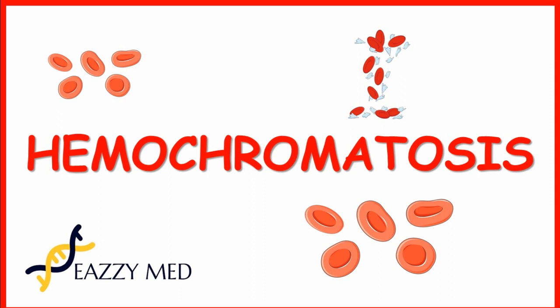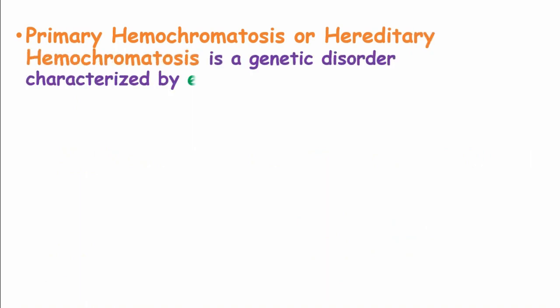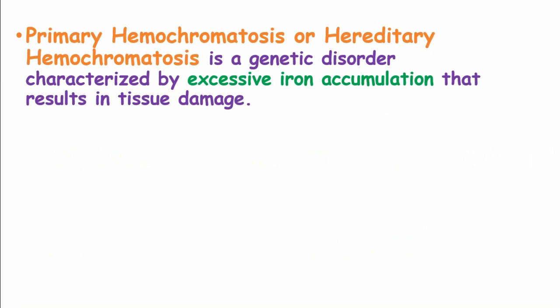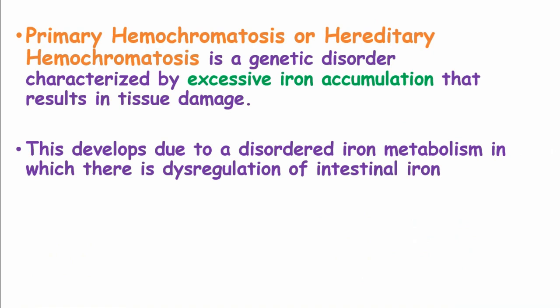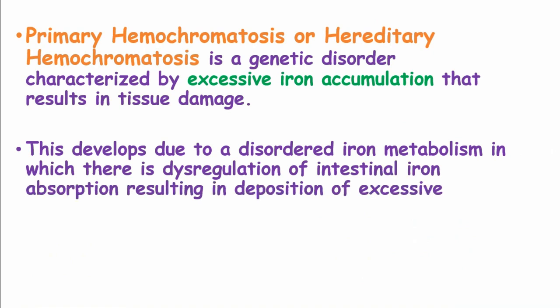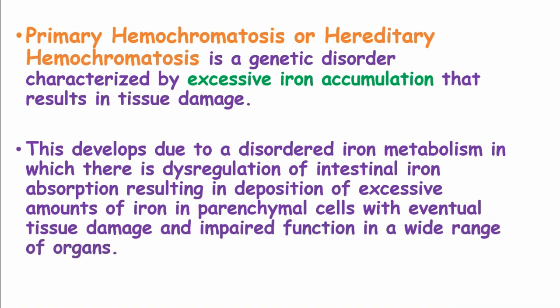Today we shall be looking at hemochromatosis. Primary hemochromatosis, or hereditary hemochromatosis, is a genetic disorder characterized by excessive iron accumulation, resulting in tissue damage. This develops because of a disordered iron metabolism in which there is dysregulation of intestinal iron absorption, resulting in deposition of excessive amounts of iron in the parenchymal cells, which eventually cause tissue damage and impaired function in a wide range of organs.